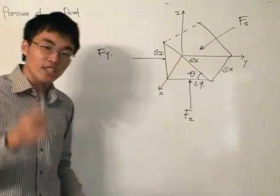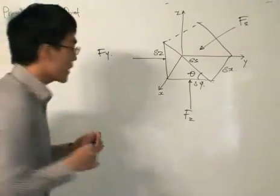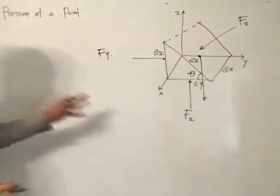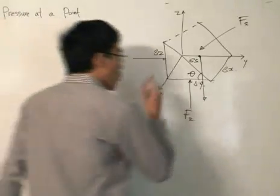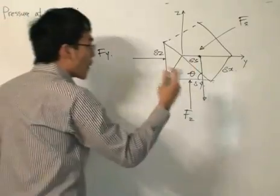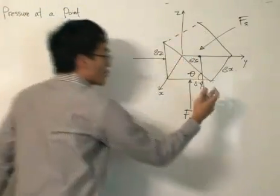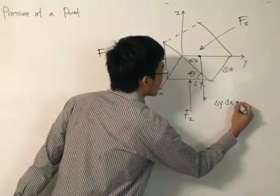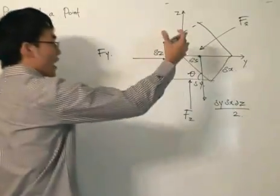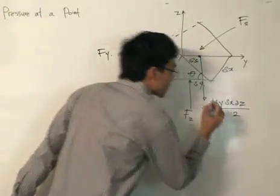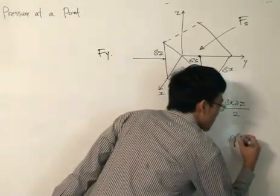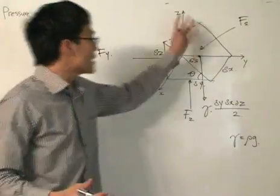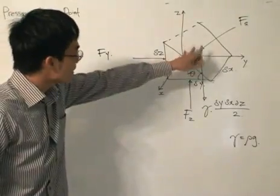The wedge shape has a certain mass, or a certain weight, and that weight acts vertically downward. The weight is simply the volume of the wedge shape — which is delta Y times delta X times delta Z divided by 2, because it's triangular in shape — times the specific weight. Recall that specific weight is the density times gravity. So that is the weight of the wedge shape.